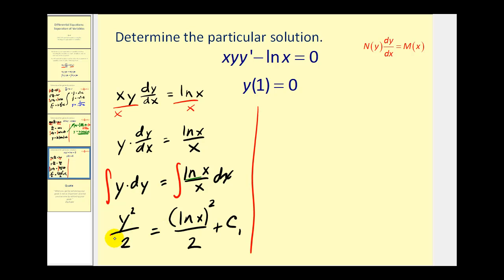Multiplying both sides of the equation by two gives us y squared equals natural log x, quantity squared. We can rewrite that, plus two times c one. Letting c equal two times c one — another constant — we have y squared equals natural log x squared plus c. Even though this is defined implicitly, let's go ahead and leave it like this as our general solution.